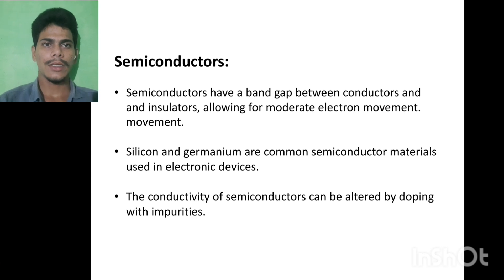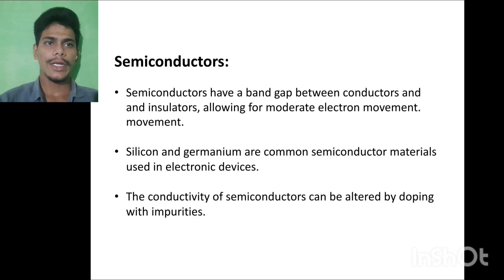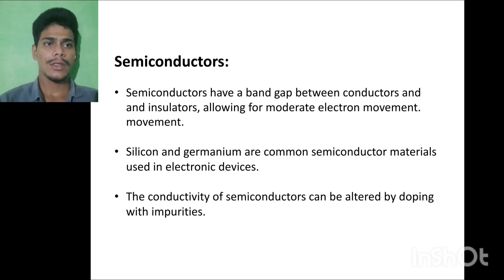Semiconductors have a band gap between conductors and insulators, allowing for moderate electron movement. Silicon and germanium are commonly used semiconductor materials in electronic devices. The conductivity of semiconductors can be altered by doping with impurities.